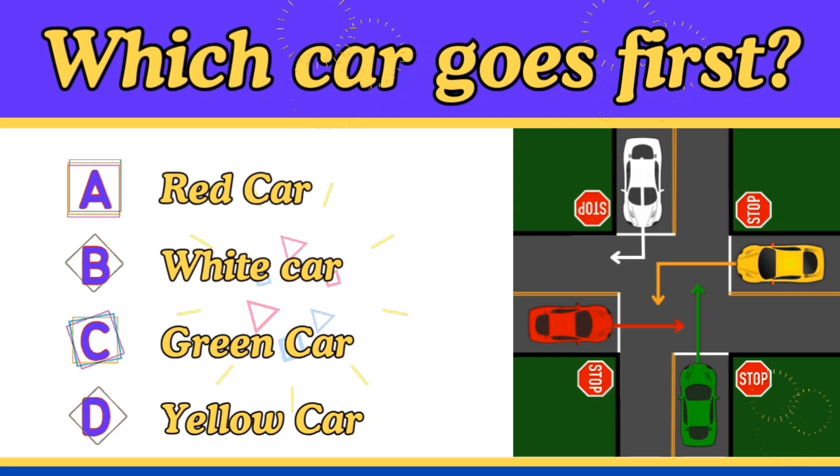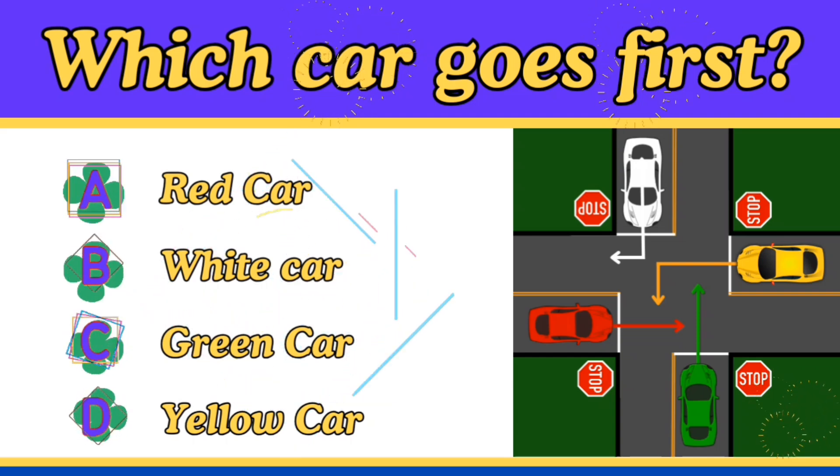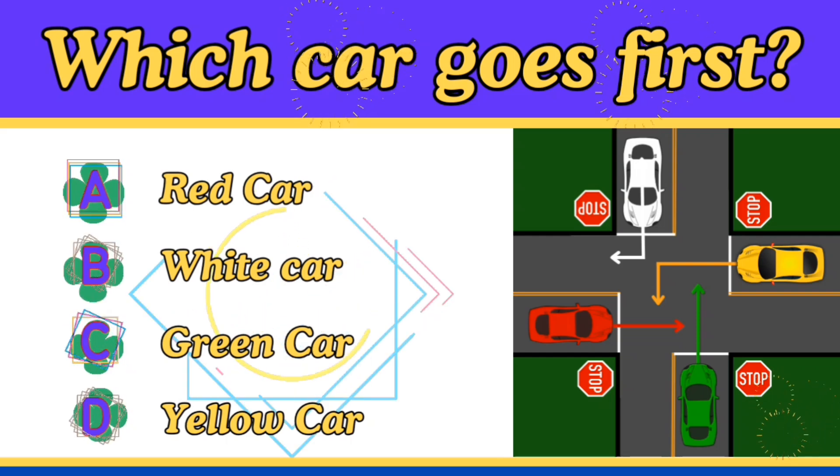Another road rule states that any car turning left must yield to oncoming traffic. Now according to that road rule, the yellow car turning left must give right of way to the red car, which is going straight ahead.